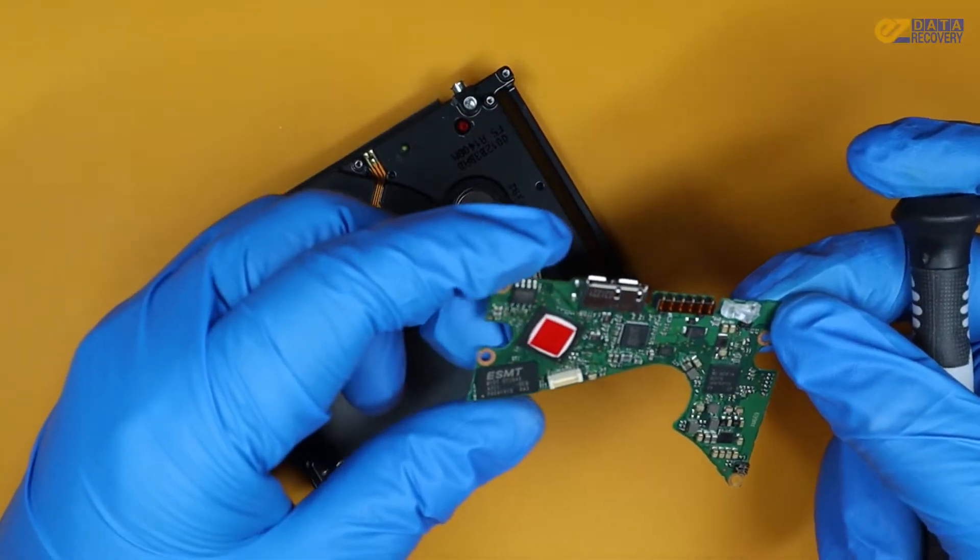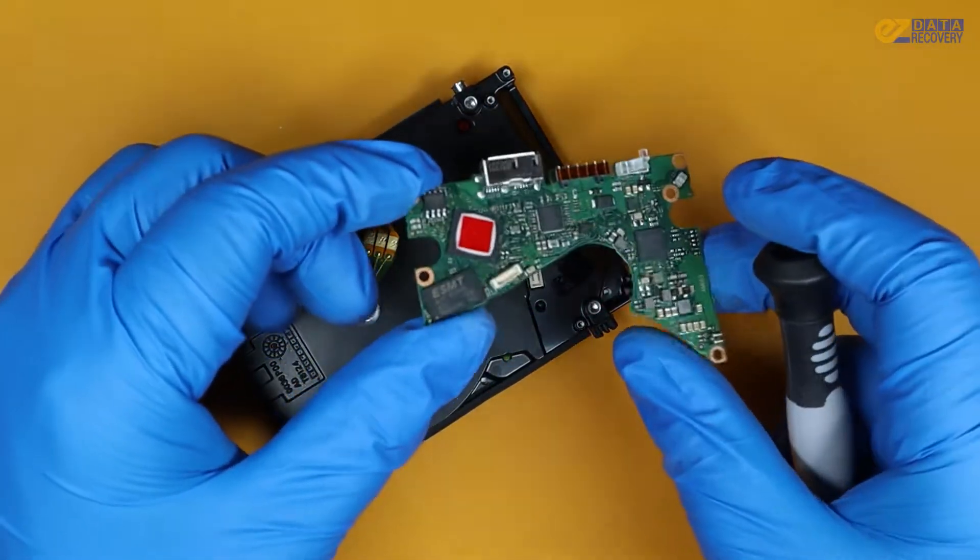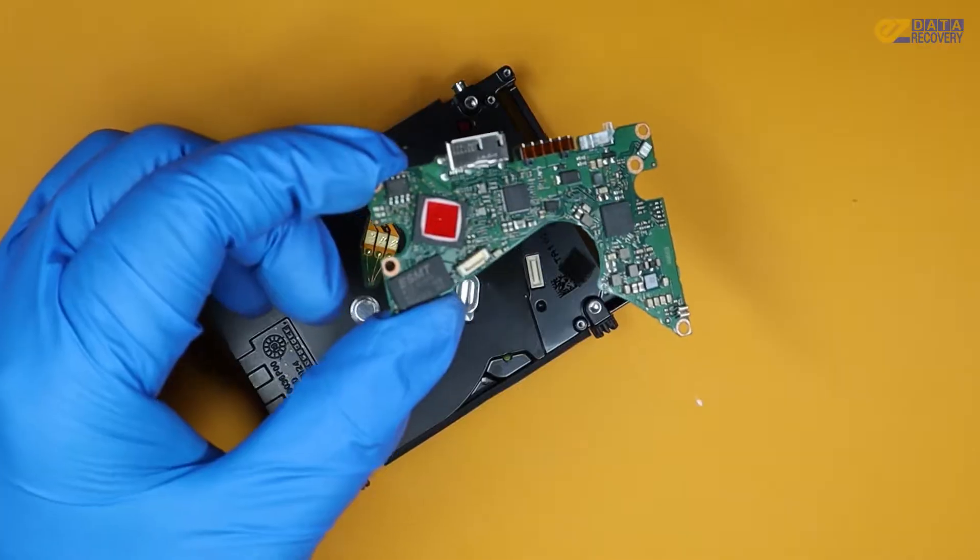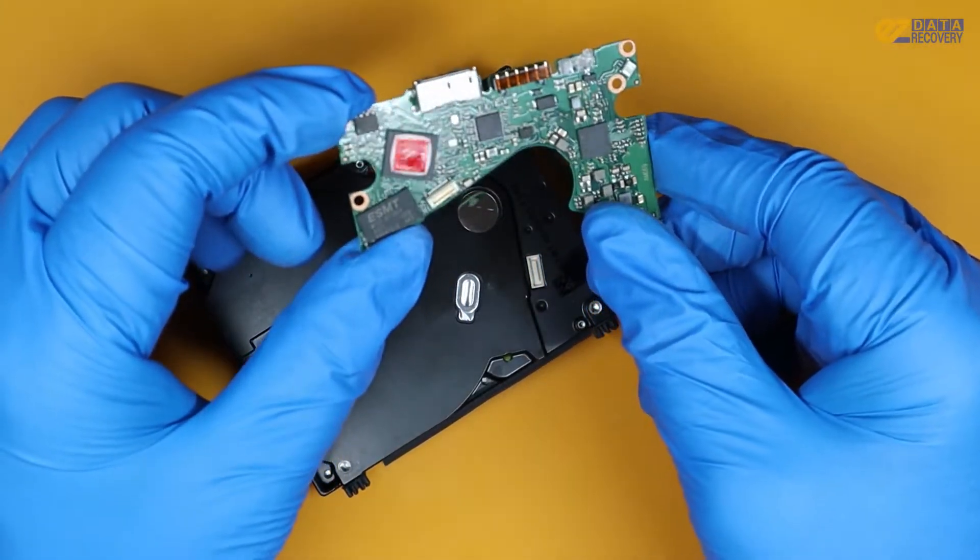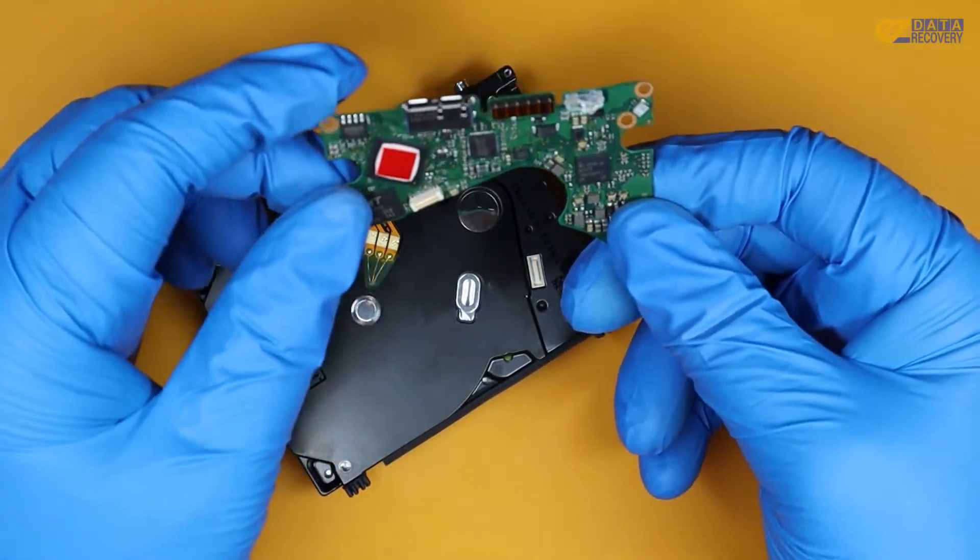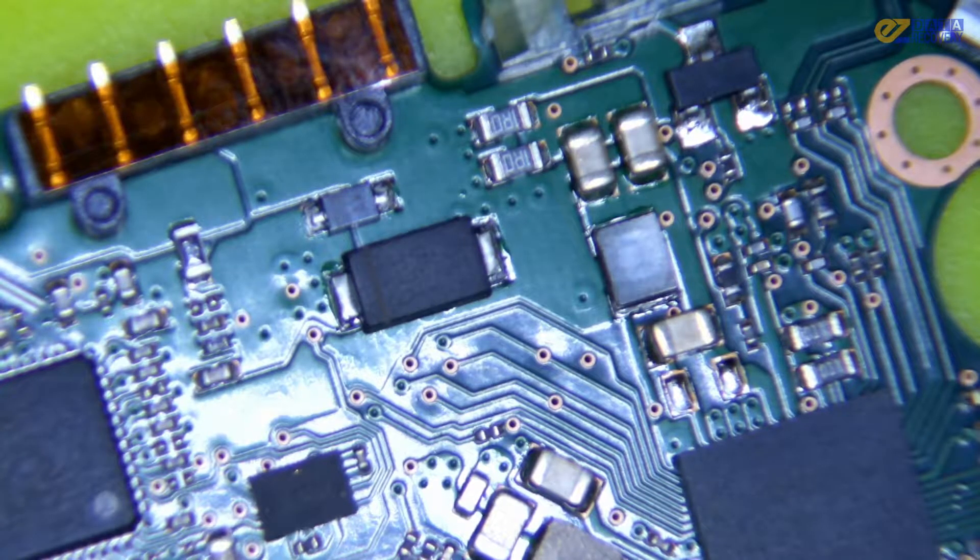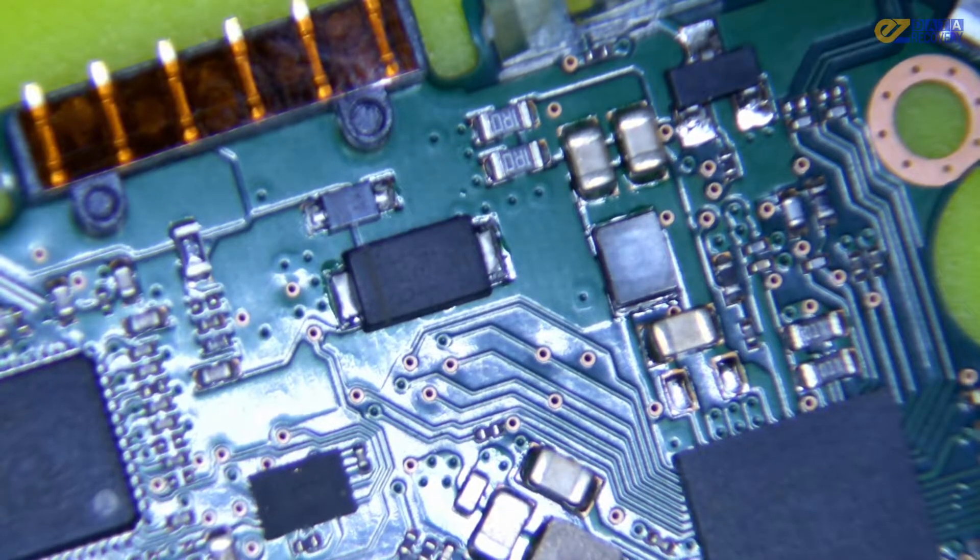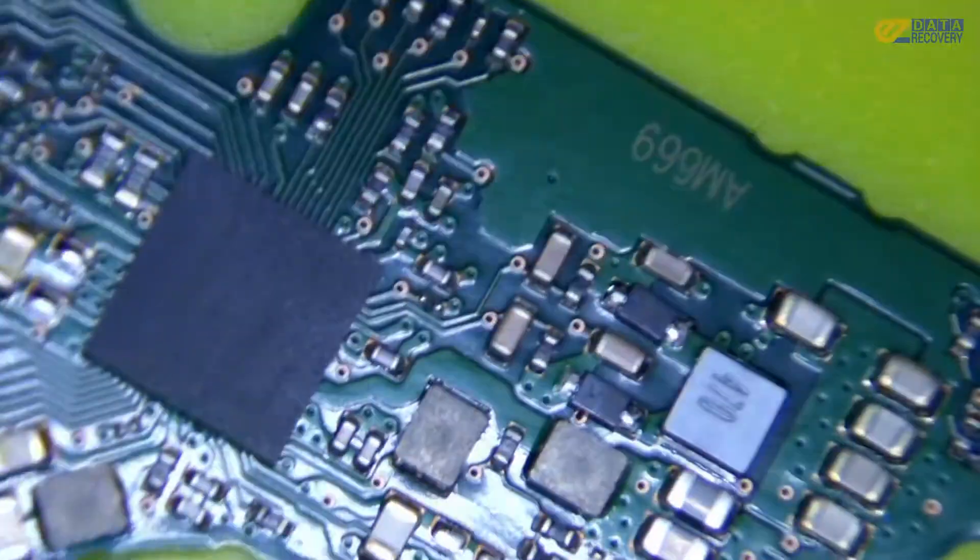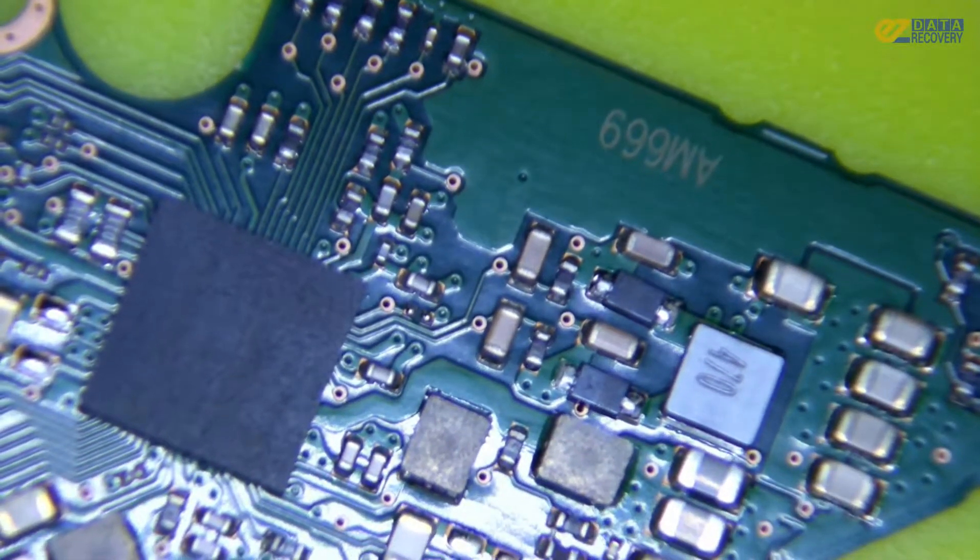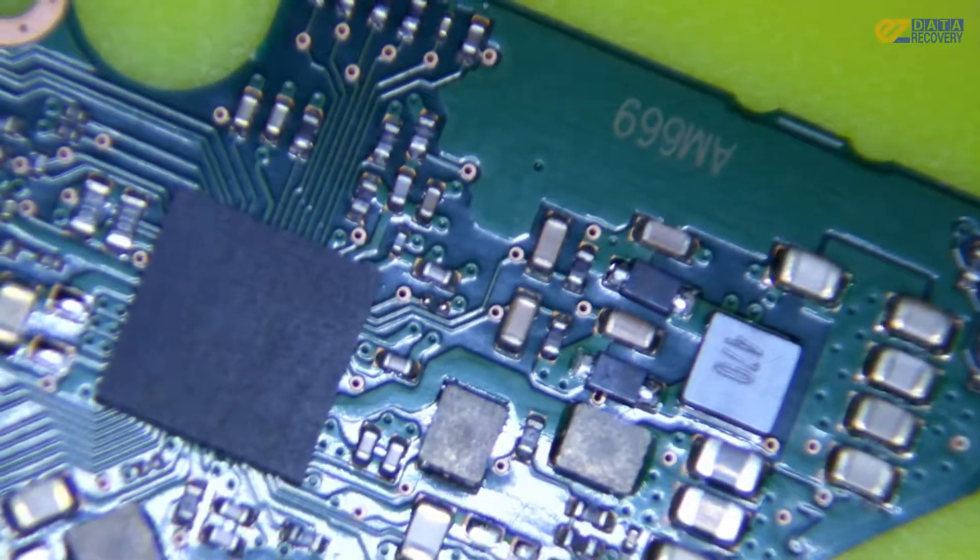We need to inspect the board first. Let's do a quick visual inspection and see if we can find any damaged components, any burnt components, or anything that's been knocked off. We can see here everything looks to be fine, everything looks to be clean. We're not seeing any obvious damage to the board.